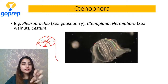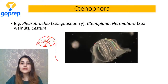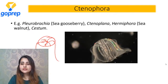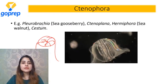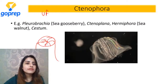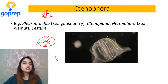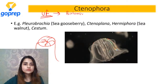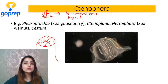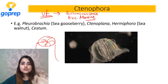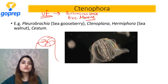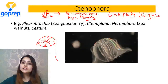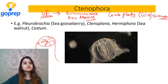Dikh raha hai sabko is page pe - can you see it is emitting light, alag-alag colors aa rahe hain - this property is called as bioluminescence. Come on tell me - sabko samajh aaya? Aaj humne kya baat ki - about Coelenterata aur Ctenophora. Unique features of Ctenophora: first, it shows bioluminescence. Second, they are exclusively marine. Third, they have comb plates with cilia which help in locomotion.